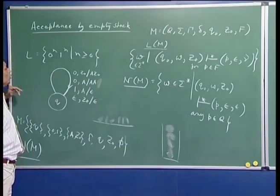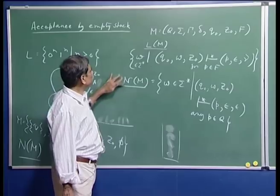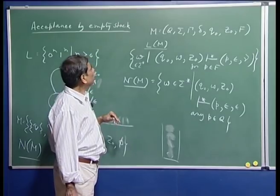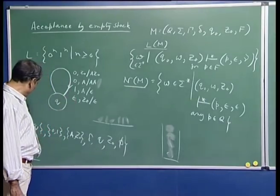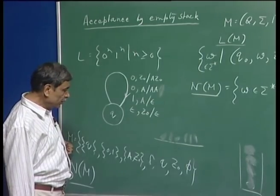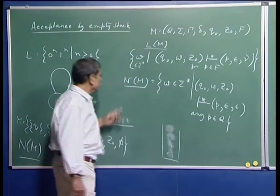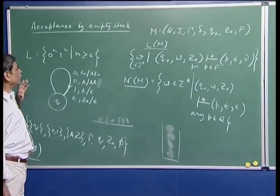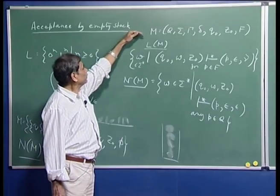So we have two notions of acceptance and correspondingly two languages possibly associated with the same machine. As a trivial observation, the language accepted by this machine M by final state is empty, since there is no final state, so no string satisfies that condition. The key point is that for every PDA M we can talk about two languages associated with it.